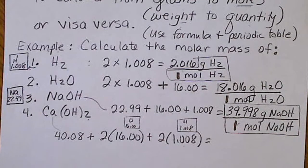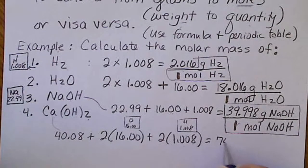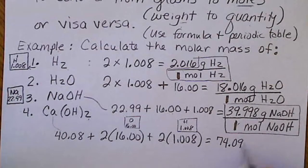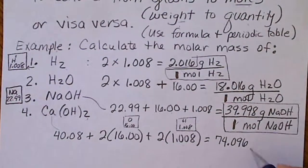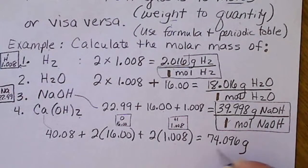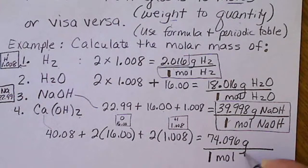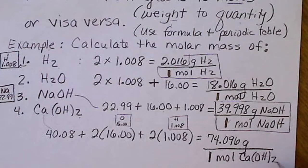We use the calculator, come up with that number, and we get 74.096. Coming up with the number is easy. What we need to remember to do is that number is always followed by grams per big fat 1 mole, and we should put the formula there as well. Grams of calcium hydroxide per 1 mole of calcium hydroxide.